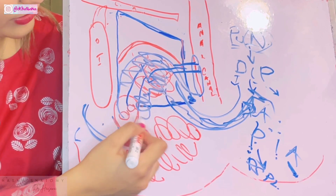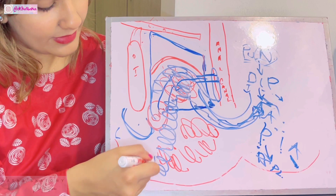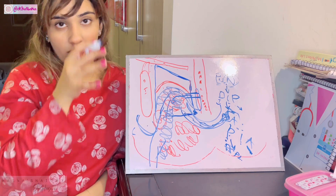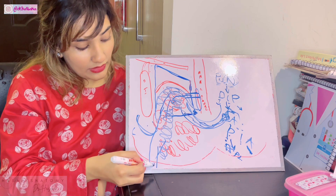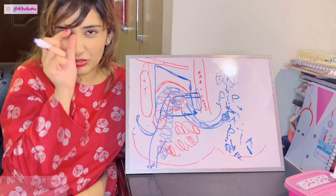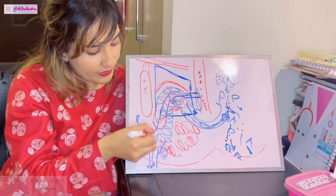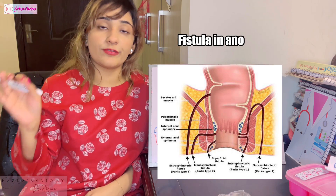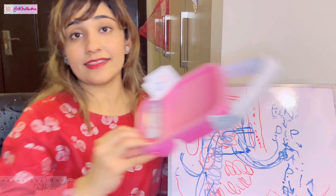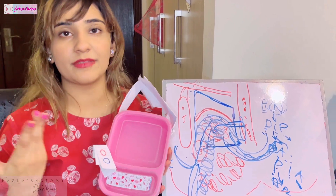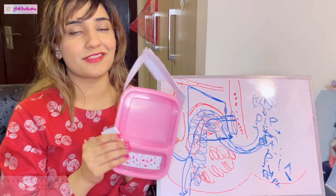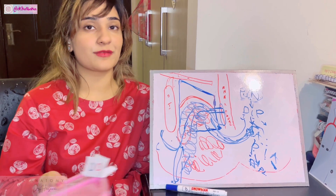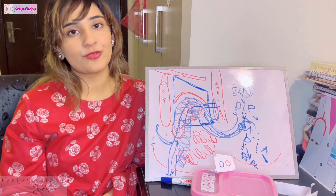Any infection can travel from the anal canal into the ischioanal fossa, forming an abscess. This infection can then form a communication to the outside through the skin — a canalization occurs on the skin of the anal region. If pus is leaking out through a small hole, it's a clinical condition known as a fistula in ano, or the ischioanal fistula. Overall, let's thank our special guest — the lunchbox model — that helped us understand this important fossa. Hope you understood the video; do not forget to like, subscribe, and comment.